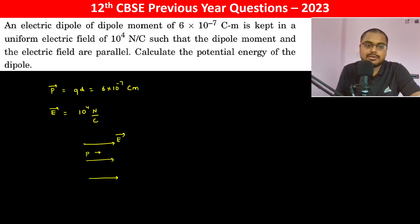Calculate the potential energy of the dipole. The potential energy formula is minus P dot E. That is minus P, which is 6 into 10 to the power minus 7 coulomb meter, into E.